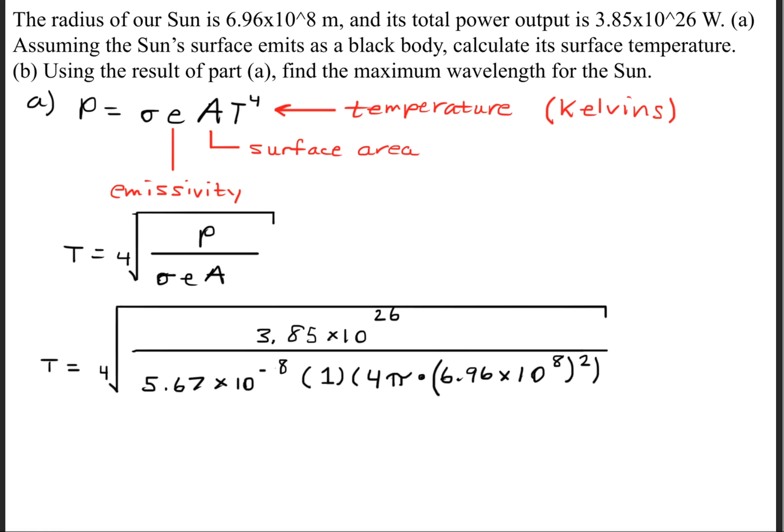Next we'll go ahead and plug in our variables and expand some of these variables such as the surface area. Since we assume the sun to be spherical, the surface area of a sphere is 4π times the radius squared. We were given the power which is 3.85 times 10 to the 26 watts.